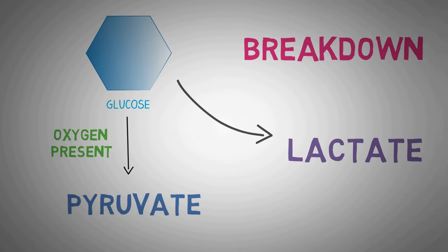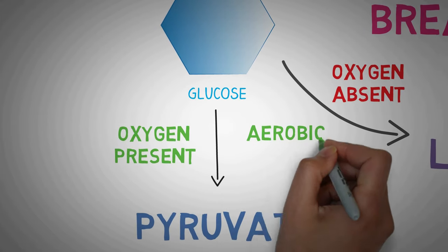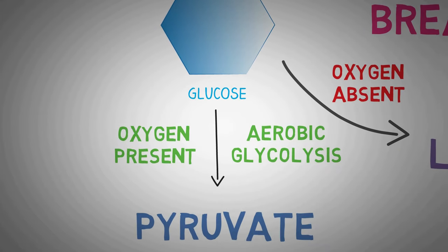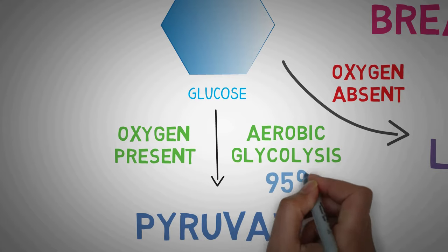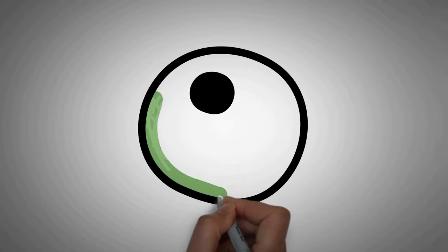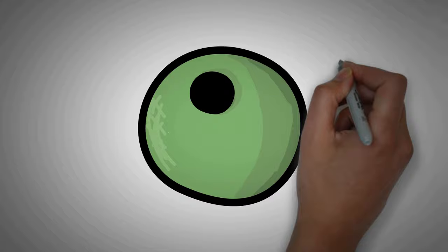If oxygen is available we call it aerobic glycolysis, and almost all of the glycolysis that takes place in humans is aerobic, except some situations in which anaerobic glycolysis takes place which doesn't require oxygen. We will discuss these situations a little bit later in this video. Now let's start with the actual process of glycolysis.